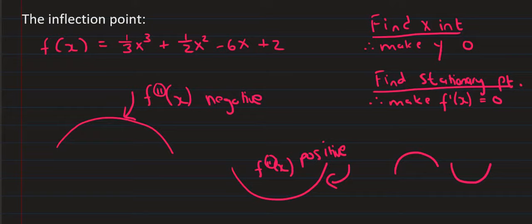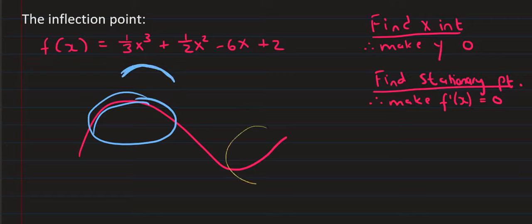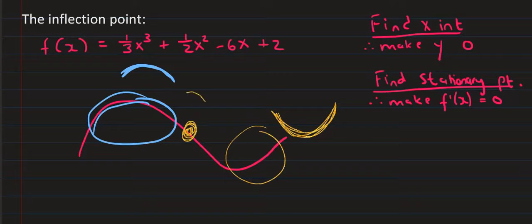It's called the inflection point, and it's the place where the graph changes from concave up to concave down, or concave down to concave up. We can see that over one interval the graph is concave down, whereas over another interval it's concave up. Somewhere in between those two places it must have changed — that place is the inflection point, where it changes from concave down to concave up.